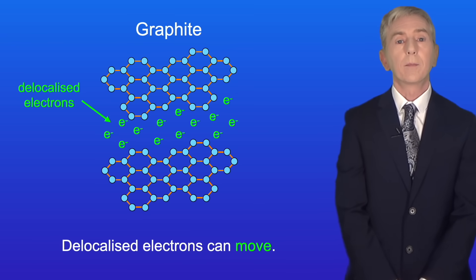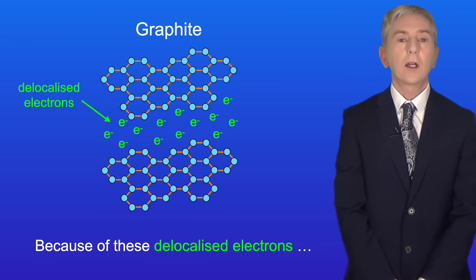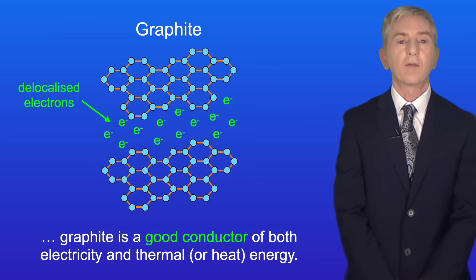Delocalized electrons can move. Because of these delocalized electrons, graphite is a good conductor of both electricity and thermal or heat energy.